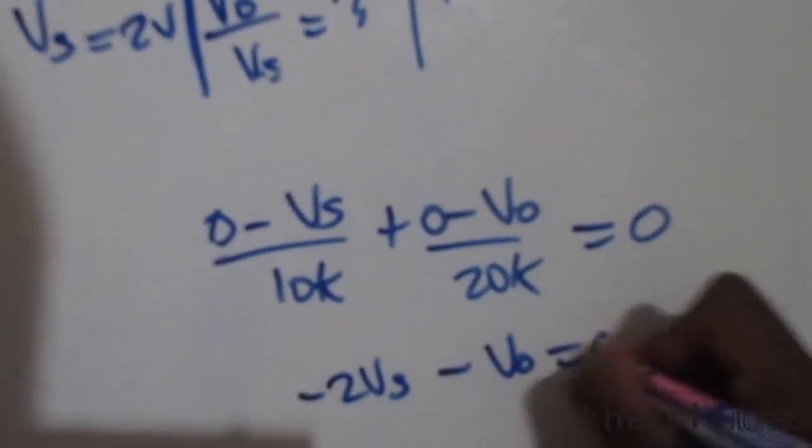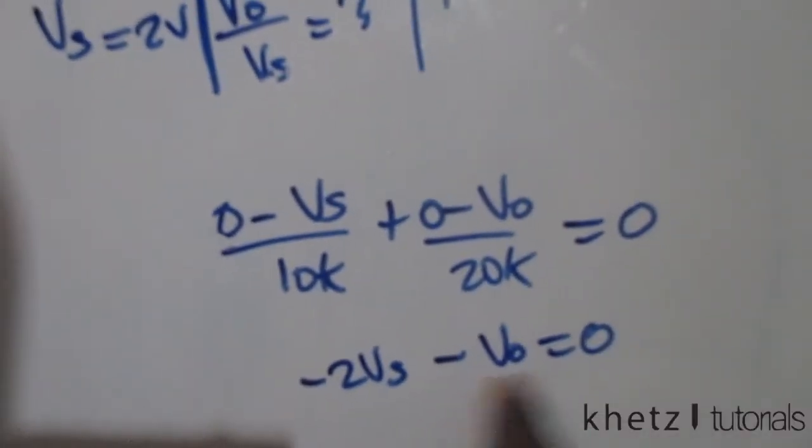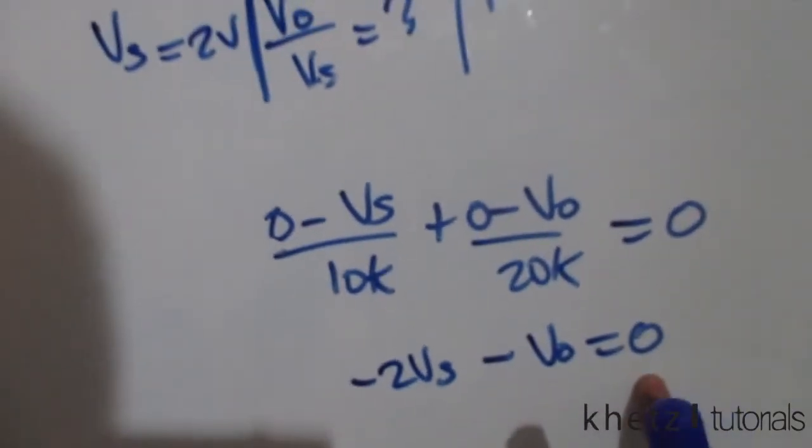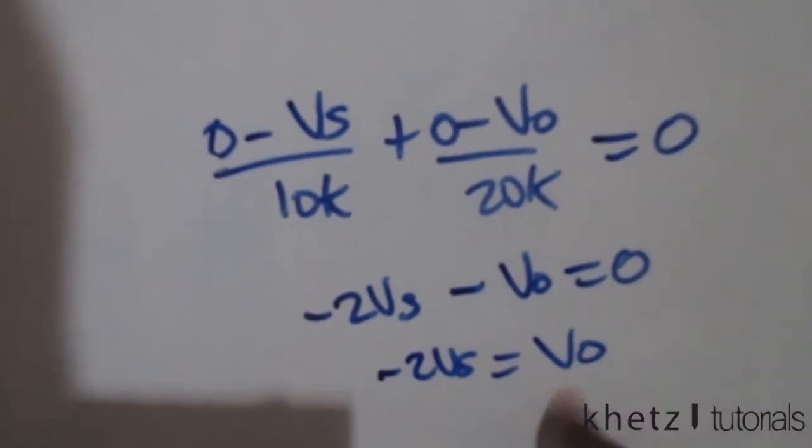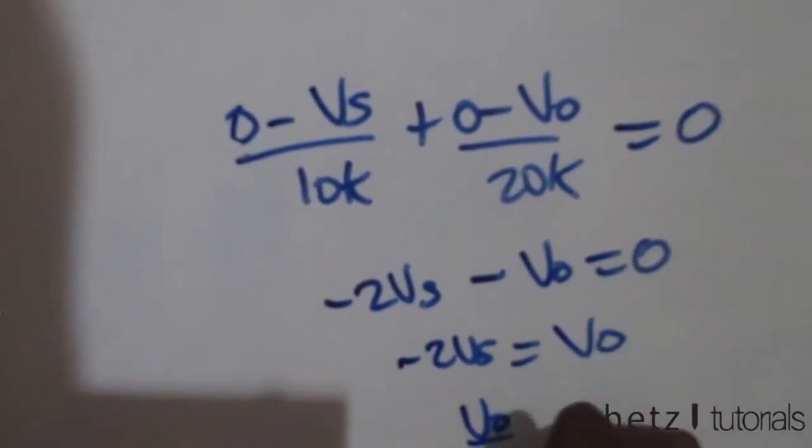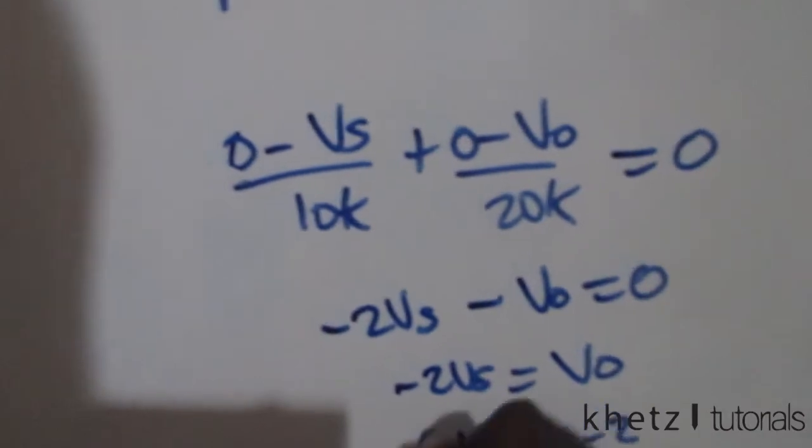Taking this Vo to this side of the equal sign, we are gonna have negative 2Vs is equal to Vo. Now finding Vo divided by Vs, that is your answer.